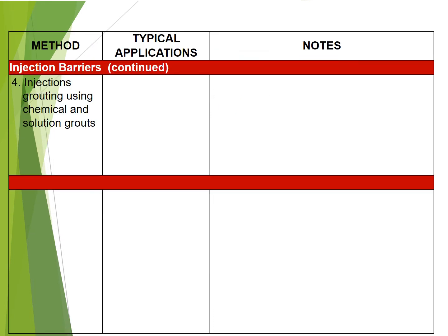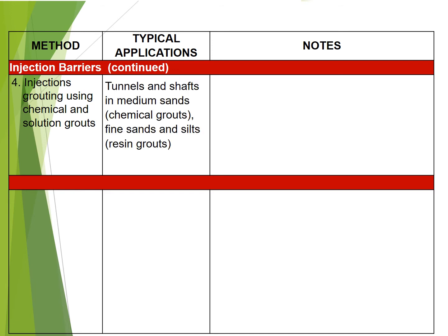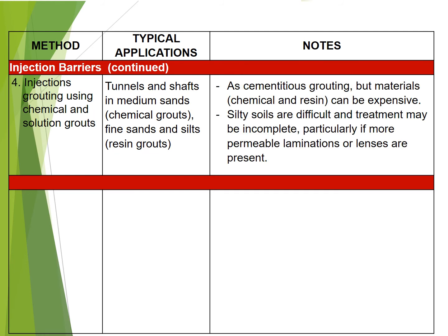4. Injection grouting using chemical and solution grouts: used for tunnels and shafts in medium sands with chemical grouts, and fine sands and silts with resin grouts. As with cementitious grouting, but the materials — chemical and resin — can be expensive. Silty soils are difficult to treat and treatment may be incomplete, particularly if more permeable laminations or lenses are present.